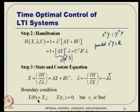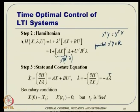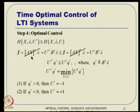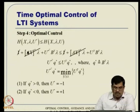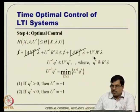Step four is critical: we want to see what kind of optimal control this leads to. We must find u* such that H(x, u*, λ) ≤ H(x, u, λ) for all admissible u. Substituting the Hamiltonian, the terms 1 and xᵀAᵀλ cancel from both sides. What remains is: (u*)ᵀq* ≤ uᵀq*, where q* is defined as Bᵀλ. For simplicity we define q* = Bᵀλ.